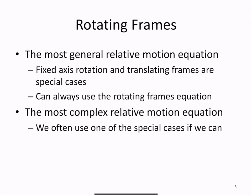The rotating frames equation is the most general relative motion equation. Fixed axis rotation and the translating frames relative motion are special cases of this larger equation. So we can always use the rotating frames equation. But it's also the most complex equation. So we often try and use these two special cases of fixed axis rotation and translating frames if we can.